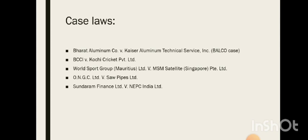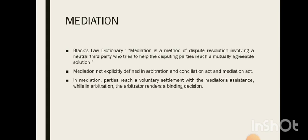Third, World Sports Group Mauritius Ltd. v. MSM Satellite Singapore Pvt. Ltd. — a dispute regarding a media rights agreement for broadcasting IPL matches with an arbitration clause providing for arbitration in Singapore. The Supreme Court held that when parties choose a foreign seat, Indian courts have limited jurisdiction to interfere. Fourth, ONGC Ltd. v. Saw Pipes Ltd. — regarding a contract for supply of pipes, the Supreme Court emphasized the autonomy of arbitration tribunals in conducting proceedings and limiting judicial intervention. Fifth, Sundaram Finance Ltd. v. NEPC India Ltd. — the Supreme Court held that courts should not interfere with arbitral awards unless there is a fundamental error of law or public policy violation.